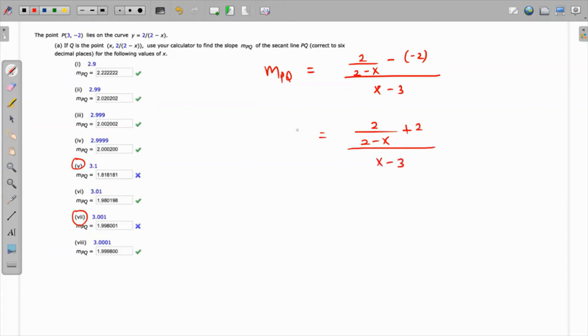Now all we got to do is substitute x as 3.1. If we substitute x as 3.1 and calculate the slope, the slope actually comes out to 1.81818 when we round to the sixth decimal place.